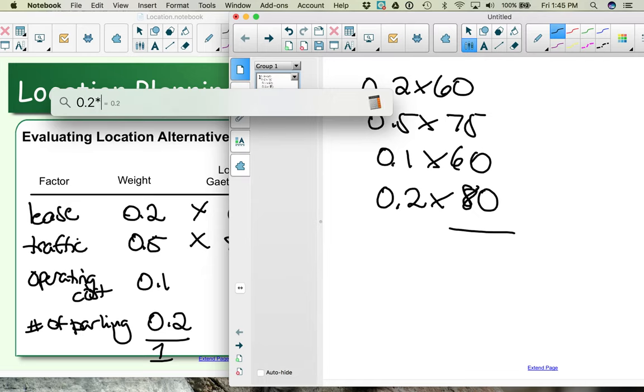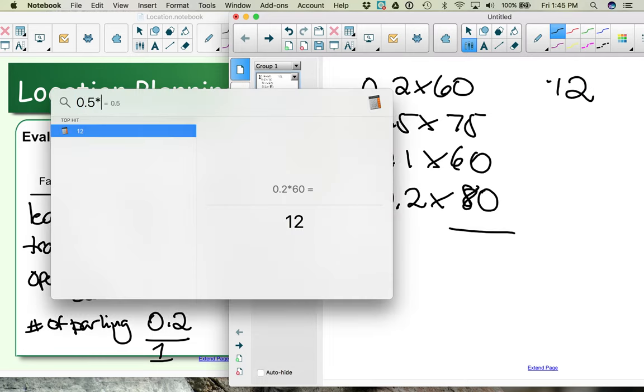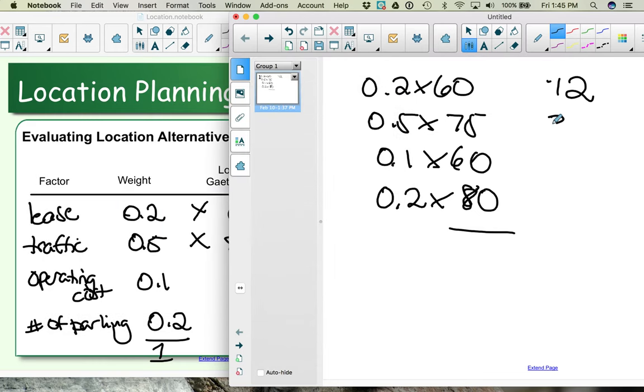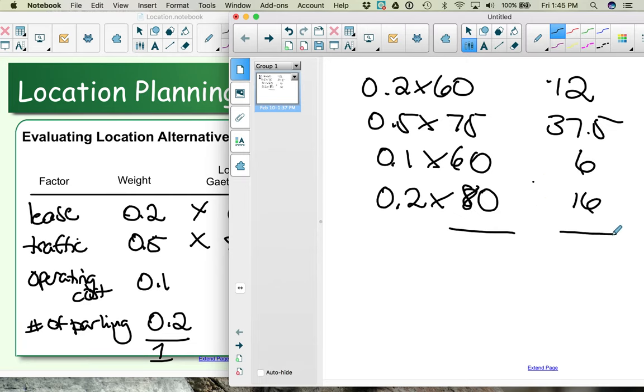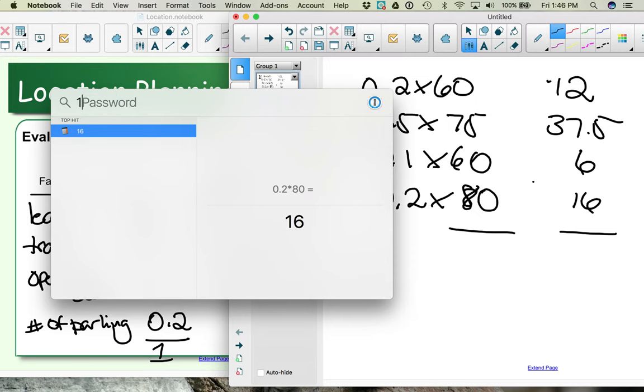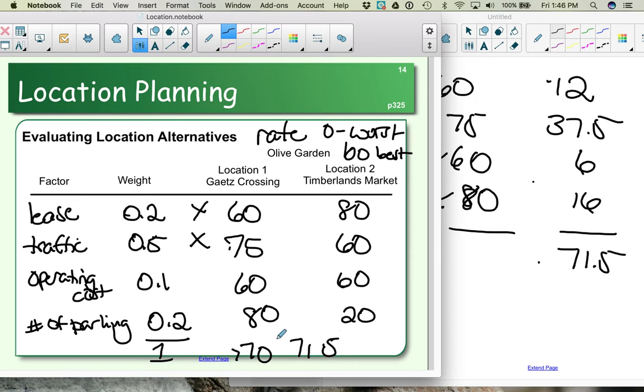Here on my screen I'm just going to do the quick calculation. 0.2 times 60 is 12. 0.5 times 75 is 37 and a half. 0.1 times 60 is 6, and 0.2 times 80 is 16. Now we want to total that up. 12 plus 37 and a half plus 6 plus 16—the total number is 71.5. So Gates Crossing gives us a 71.5 as its total.